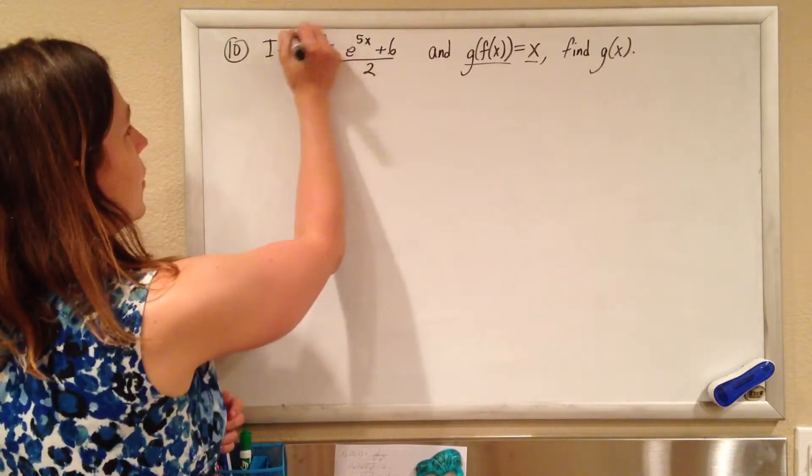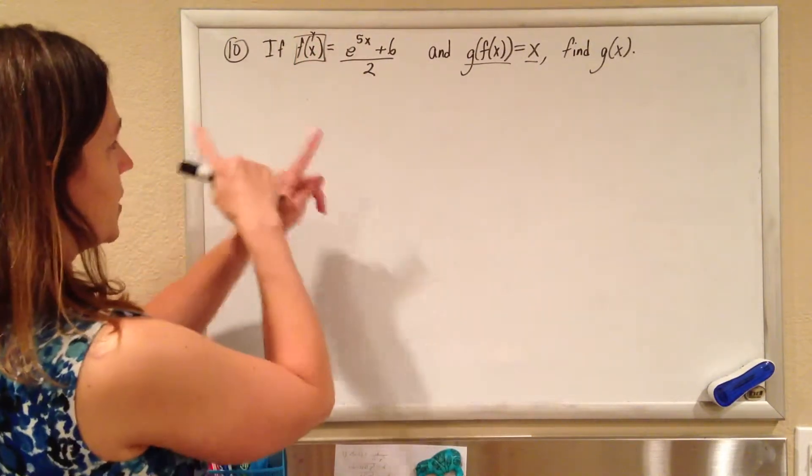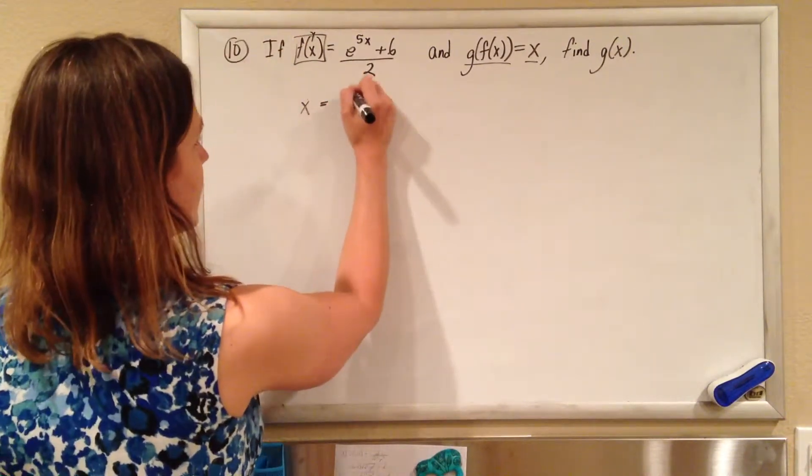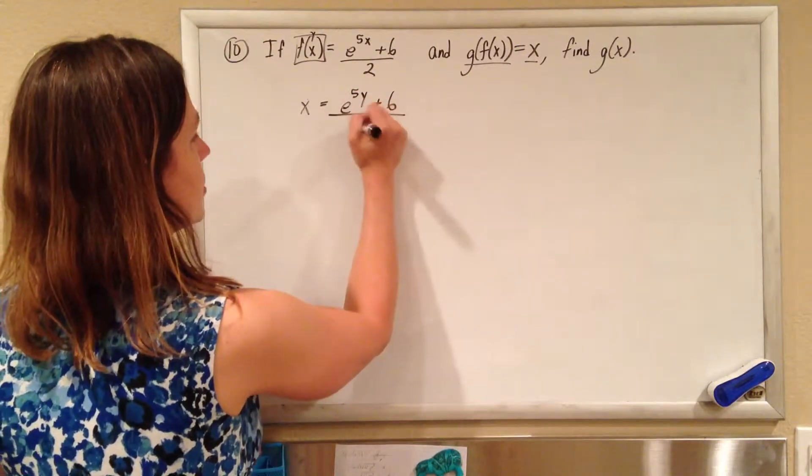So f of x is like y, so when we do our switch, we're going to switch the x and the y, so y will become x, and we'll have e to the 5y plus 6 over 2.